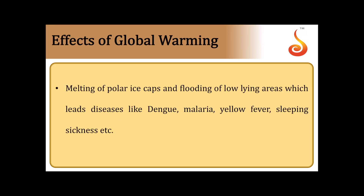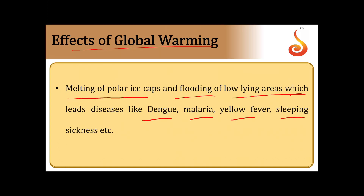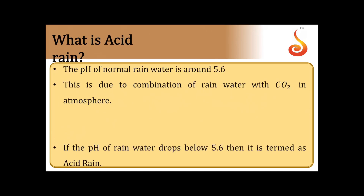The effects of global warming include melting of polar ice caps and flooding of low-lying areas due to high temperatures. This also leads to diseases like Dengue, Malaria, Yellow Fever, and Sleeping Sickness.